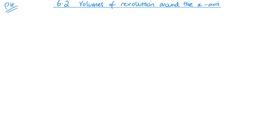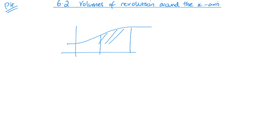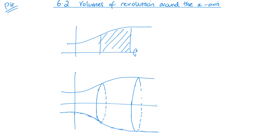For this we're looking essentially at a 2D shape that is then rotated 360 degrees around the x-axis. You already know how to do integration between two points — you can take two points and find the area. What we're looking at is what happens if you take this 2D shape and rotate it around the x-axis, and you end up with a 3D shape.